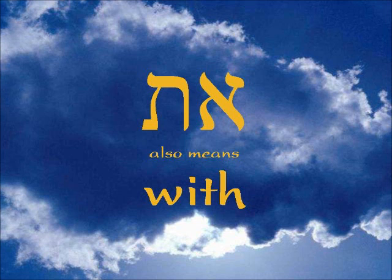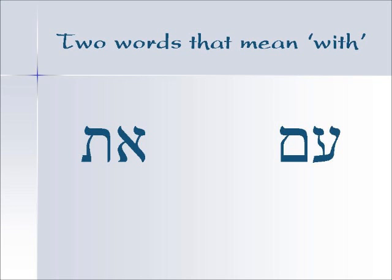Shalom. Today we're going to continue studying the Aleph Tav and we're going to learn the different meanings that this letter combination can mean, aside from the direct object marker. One of those meanings is the word 'with.' There are two words that mean 'with' in Hebrew: one is 'Im,' which is the Ayin Mem, and the other is the Aleph Tav.